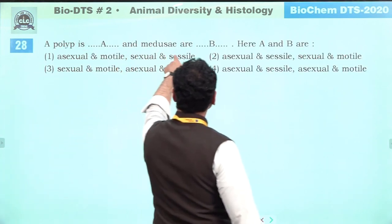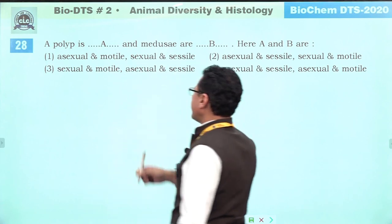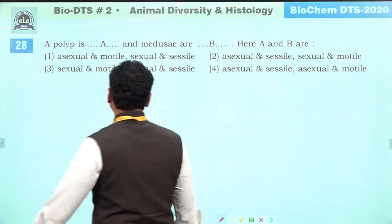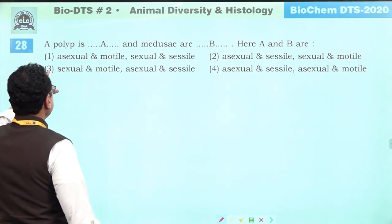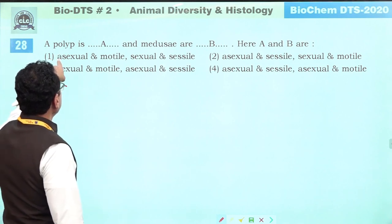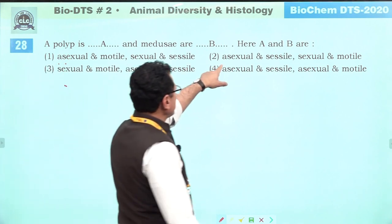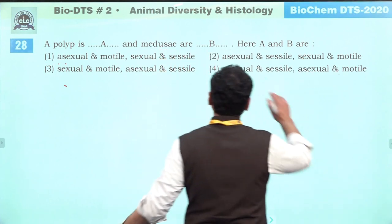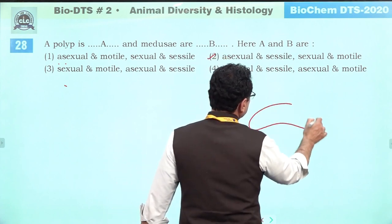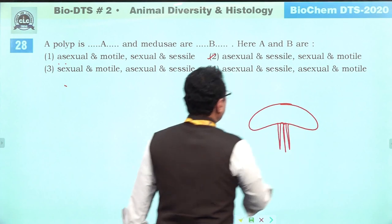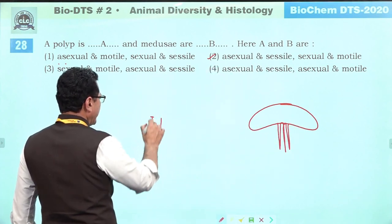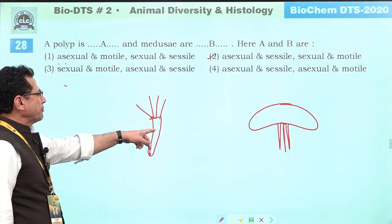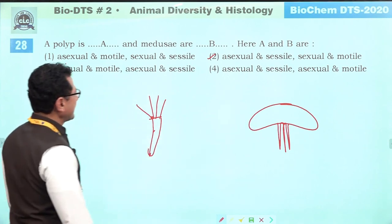If polyp is asexual and medusa is sexual: polyp is asexual, sedentary, and not motile. Medusa is sexual and motile — like jellyfish which are motile. Hydra represents the polypoid stage (asexual). The jellyfish represents the medusoid stage (sexual and motile). Second answer is the correct answer.